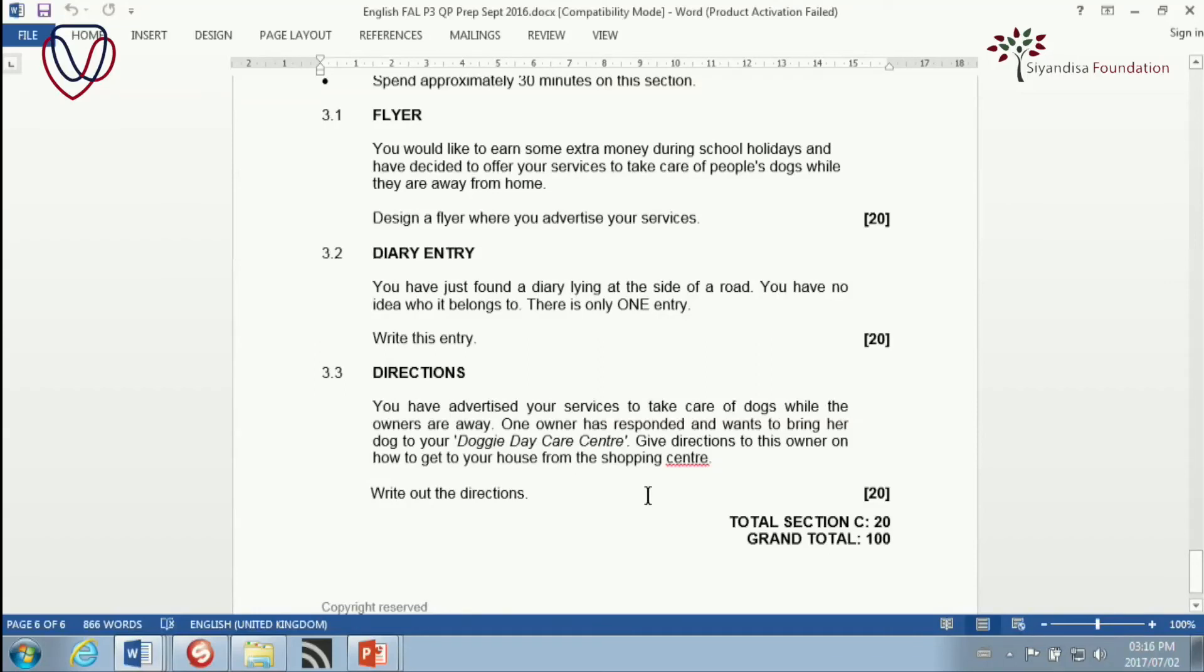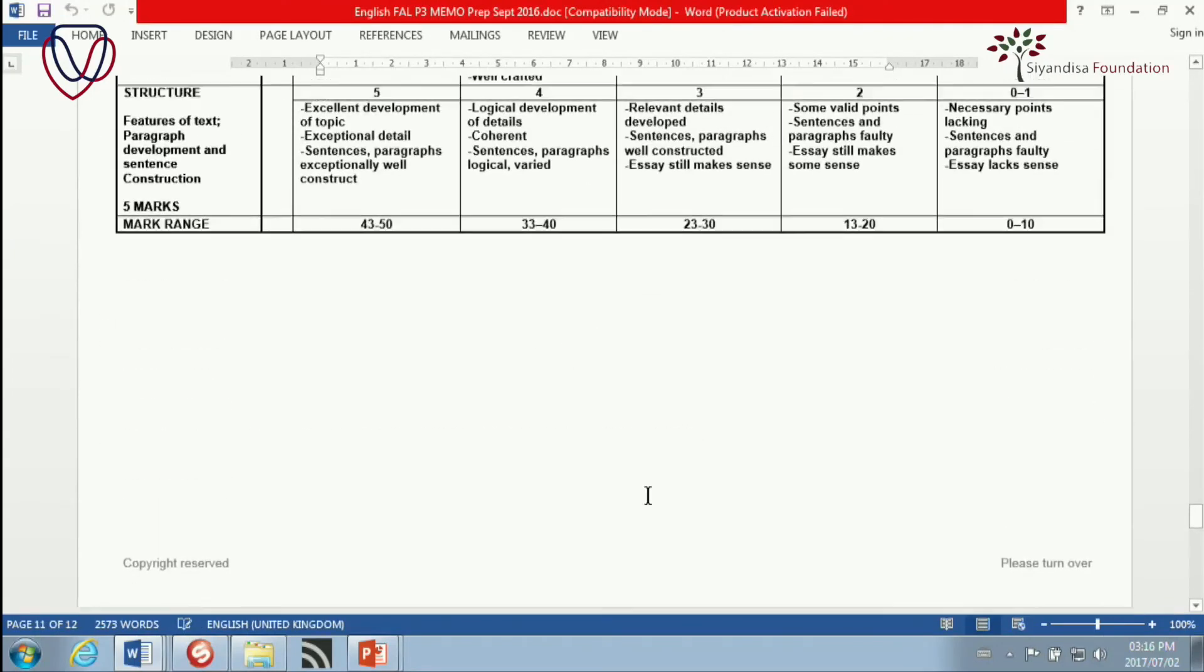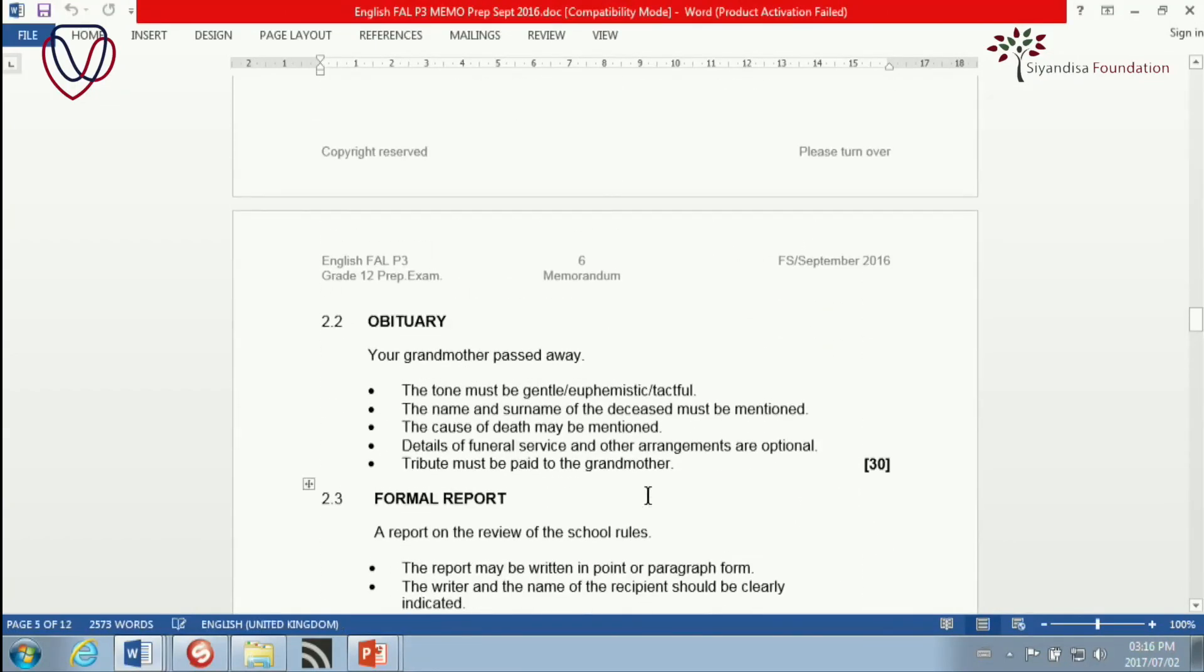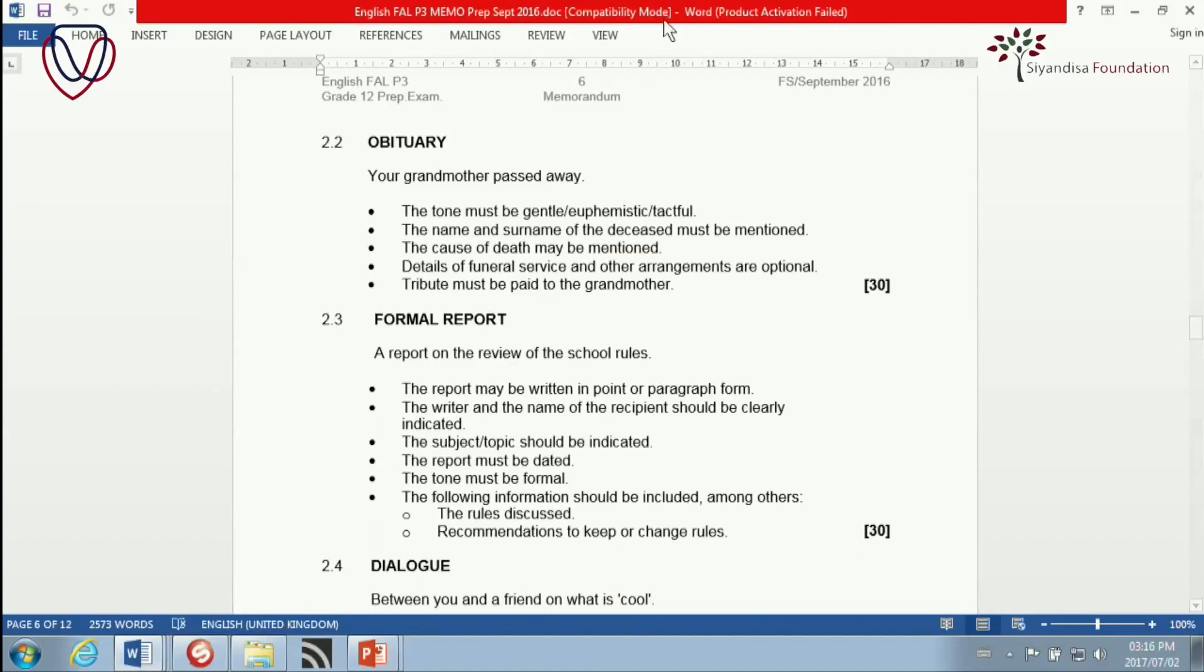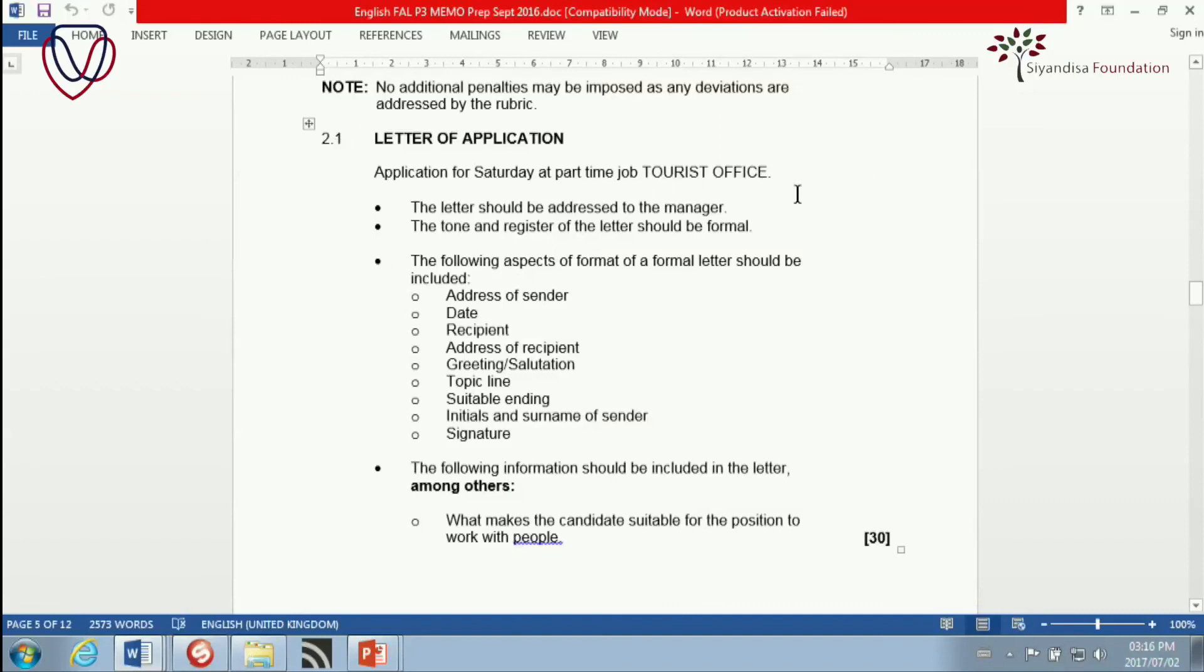Directions. You have advertised your services to take care of dogs while the owners are away. One owner has responded and wants to bring her dog to your doggy daycare center. Give directions to this owner on how to get to your house from the shopping center. Write out the directions. And all you need to do is be very detailed and you will get a really good mark for that directions question. Now, bear with me one last time. We are going to go back to our memo and just take a look at the responses expected here. We'll first go to the long transactional sections.